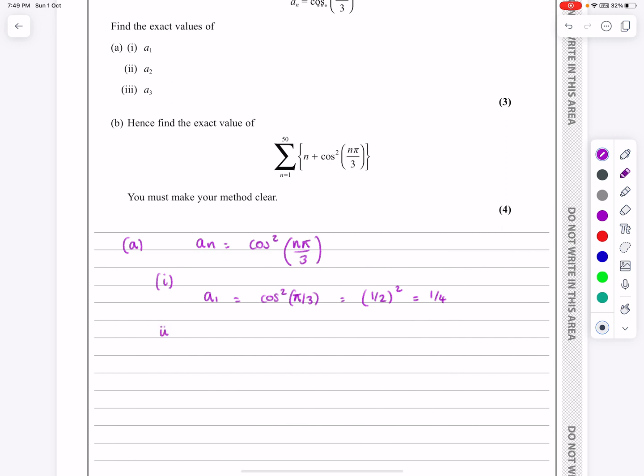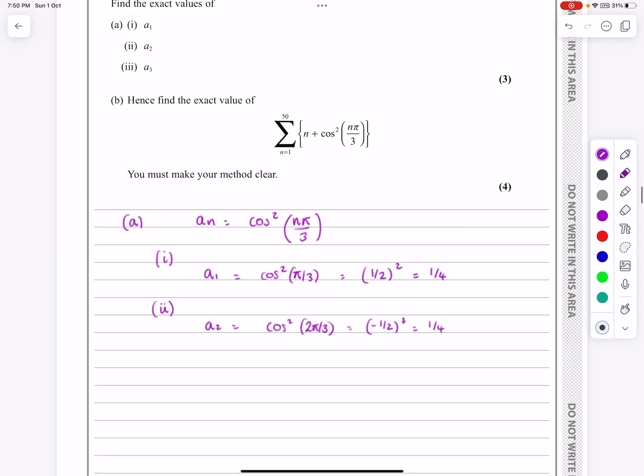Part 2, a2 is equal to cos squared 2 pi over 3. Cos 2 pi over 3, again, do it on the calculator, works out to be equal to minus a half. So minus a half squared is also going to give me a quarter.